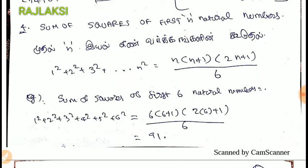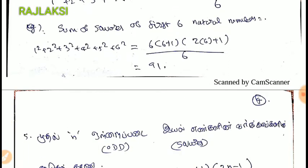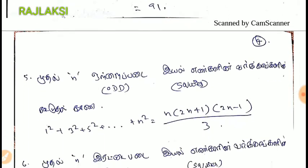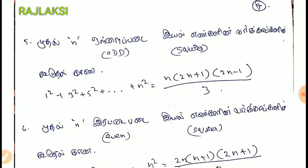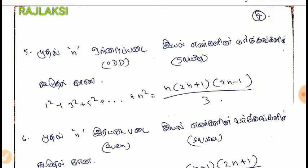This formula is a little bit more. Unlike squares, there are odd numbers — 1 square, 3 square, 5 square. We can use the formula: N into 2N plus 1 into 2N minus 1 divided by 3.